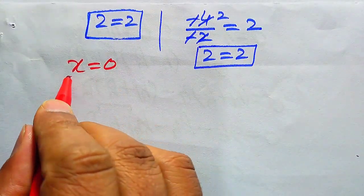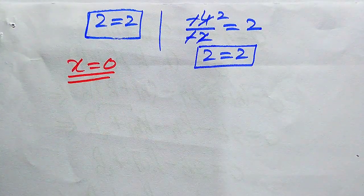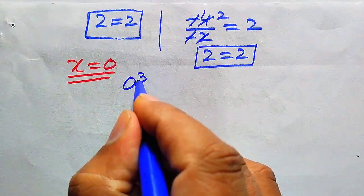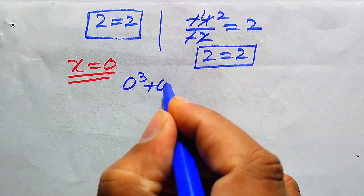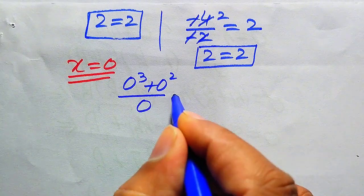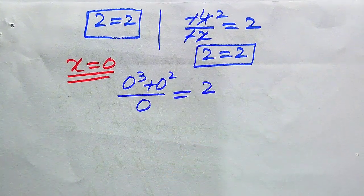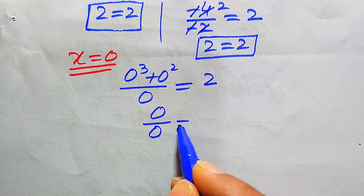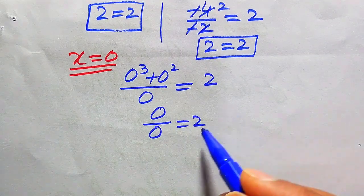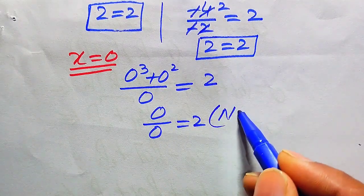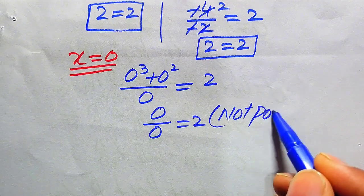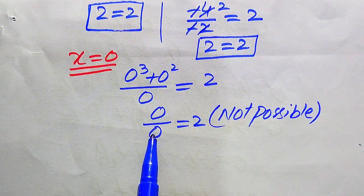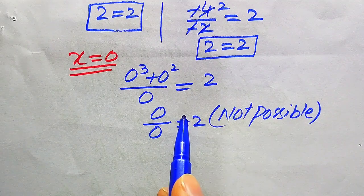Now we verify the third value, x = 0. When we substitute into the equation we get 0³ + 0² divided by 0 equals 2. We clearly see that we obtain a 0/0 form, and you know that 0/0 is called the indeterminate form.